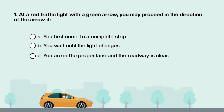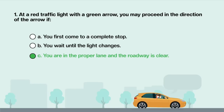At a red traffic light with a green arrow, you may proceed in the direction of the arrow if: A. You first come to a complete stop. B. You wait until the light changes. C. You are in the proper lane and the roadway is clear. Answer is C: You are in the proper lane and the roadway is clear.